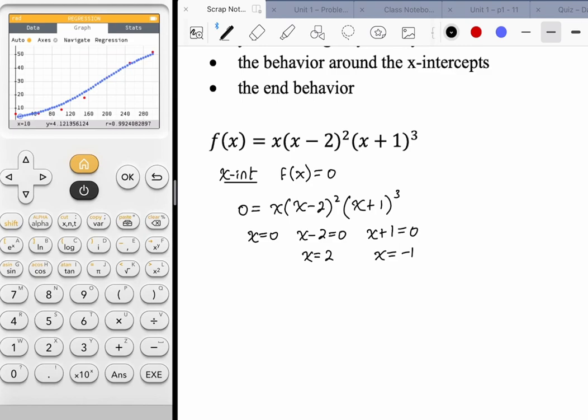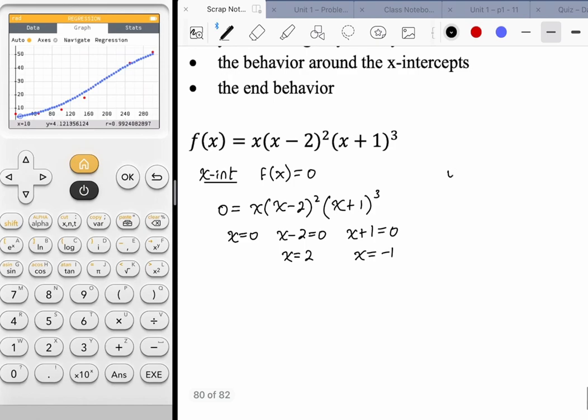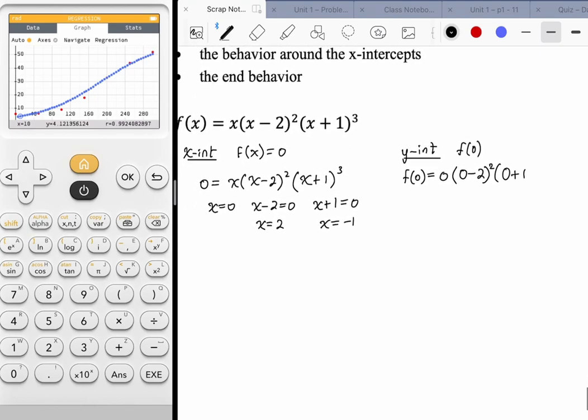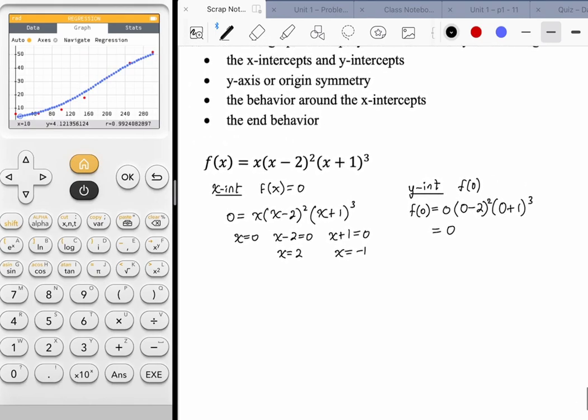Remember, we don't start graphing until we have a good amount of points. Otherwise, we could have an issue with scale. So the y-intercept, we get that by computing f of 0. So f of 0 is 0 times (0 - 2) squared times (0 + 1) cubed. That 0 in the front just wipes out everything else. We're going to get a y-intercept of 0. If you have an x-intercept of 0, you're going to have a y-intercept of 0, so you could save yourself the time.